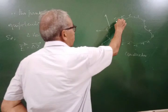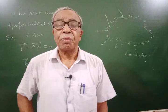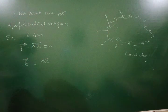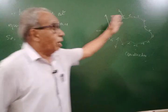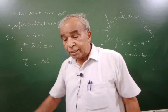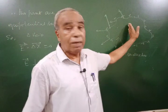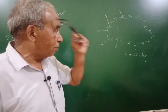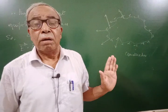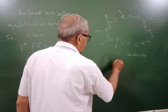So any conductor having static charge on it, whatsoever the shape — regular or irregular — is an equipotential surface. But remember: the magnitude of the electric field will not be the same everywhere on an irregular surface. It has static charge on it, and having the same potential, but the field may not be the same because field is given by sigma over epsilon zero.